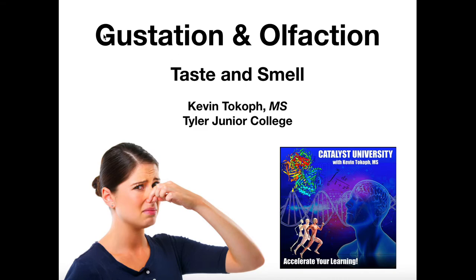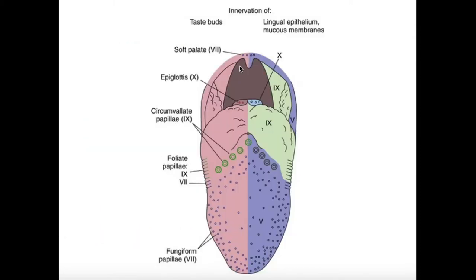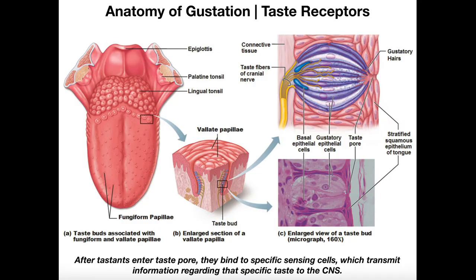In this video, we're going to discuss gustation. So let's talk about relevant anatomy. When most people think about taste, they usually associate it with the tongue. And yes, there are many, many taste buds — taste receptors — on the tongue. There are a few other structures that also have taste buds, which include the soft palate in the back of the oral cavity, also the epiglottis, and there are even some in the pharynx and the upper esophagus. But the vast majority of taste buds are located on the tongue.